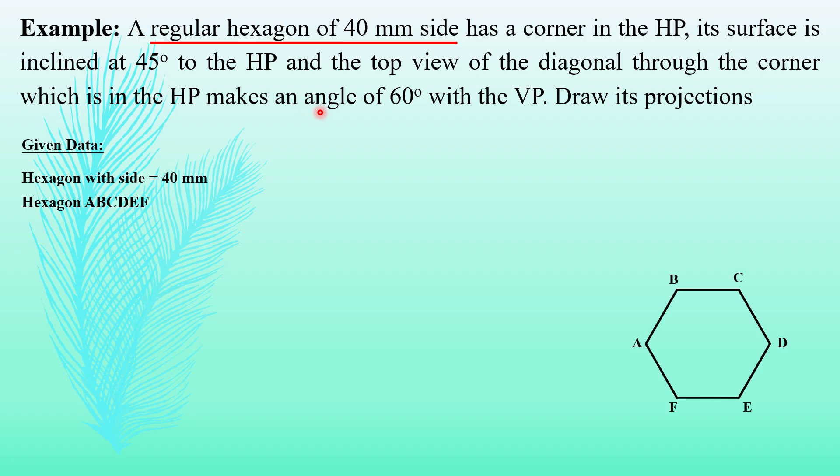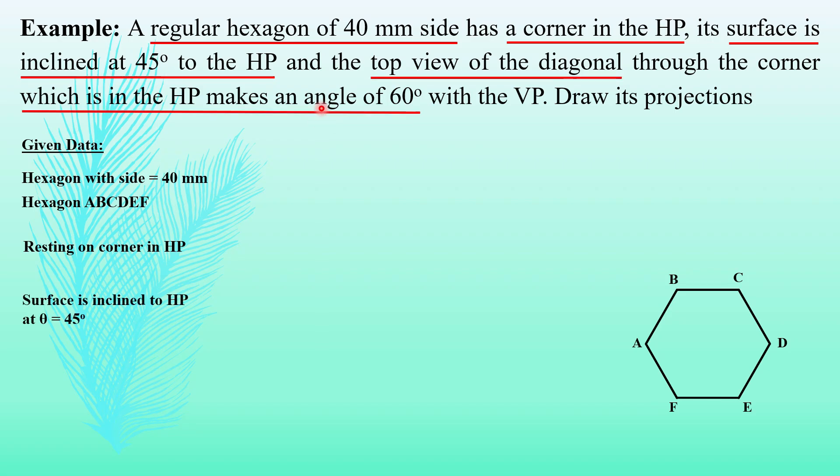One corner of this hexagon is in HP. Then, the surface making an angle 45 degrees with HP, that means theta equals 45 degrees. Top view of diagonal through the corner which is resting in HP makes an angle of 60 degrees, that means this value is beta equals 60 degrees.